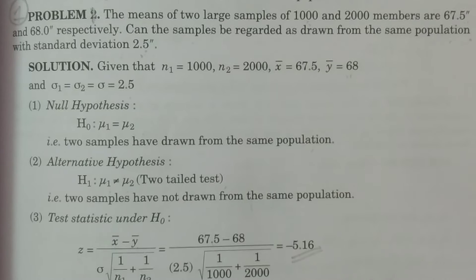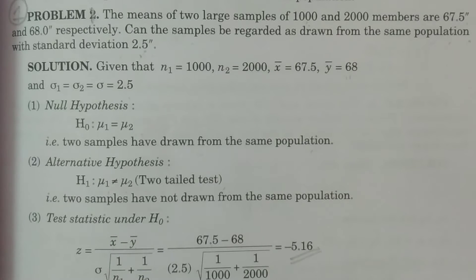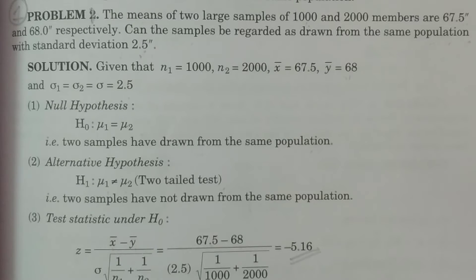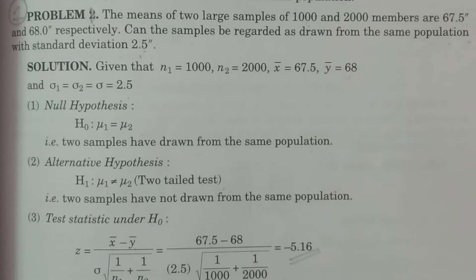I will explain to you in two cases. Case one: sigma1 is equal to sigma2 is equal to sigma — that is when sigma is known. Case two: sigma1 and sigma2 are not known. In these two cases, we will test the problem.